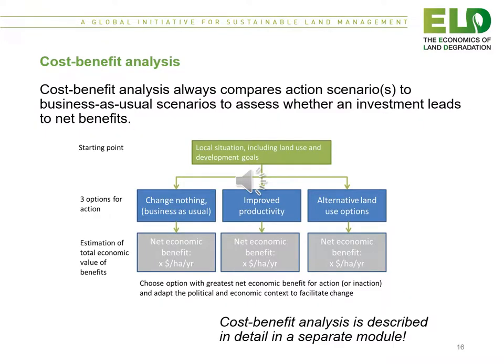Cost-benefit analysis always compares action scenarios to business-as-usual scenarios to assess whether an investment leads to net benefits. Often we consider three options: to change nothing (business as usual), improved productivity where we introduce an intervention, or we look at alternative land use options. Generally we choose the option with the greatest net economic benefit and adapt the political and economic context to facilitate changes.